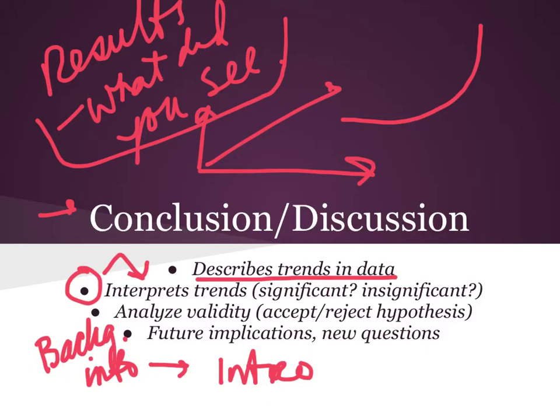Another part of the conclusion is analyzing the validity of your hypothesis. You will either accept your hypothesis — which probably should have been correct — or reject it if your prediction didn't account for an important piece of the puzzle. If you reject your hypothesis, you should offer reasons why.